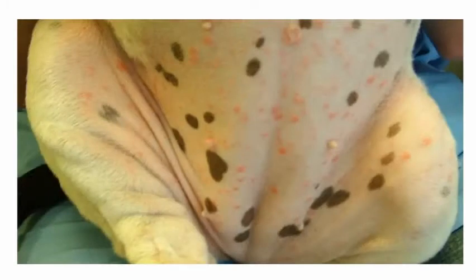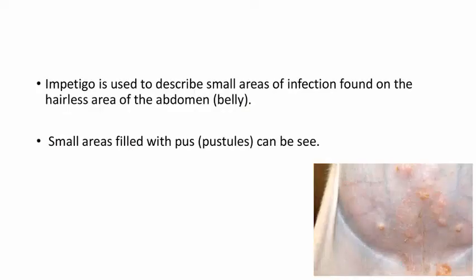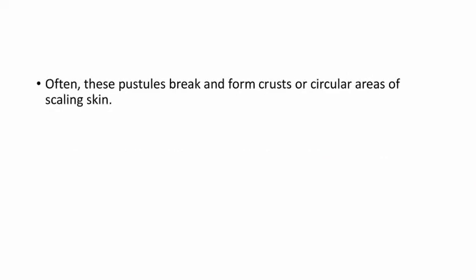Next is impetigo. Let's see the picture of impetigo in a puppy — usually it's seen in the ventral abdomen, mainly in the hairless areas. Impetigo describes small areas of infection found on the hairless area of the abdomen or belly. The small areas are filled with pus or pustules, and often the pustules break and form crusts or circular lesions of scaling skin.